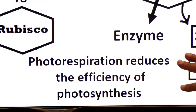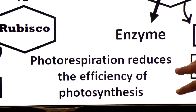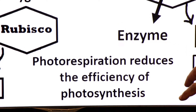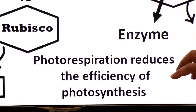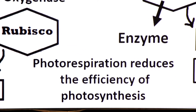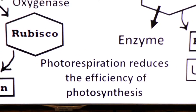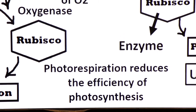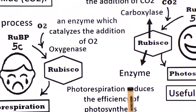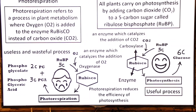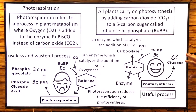Photorespiration reduces the efficiency of photosynthesis. It is a process which reduces photosynthesis and takes place in the plant.